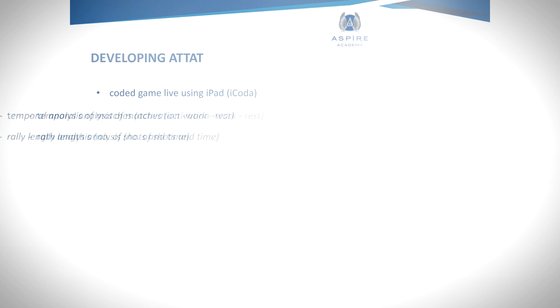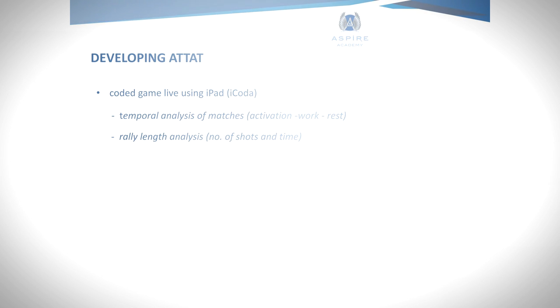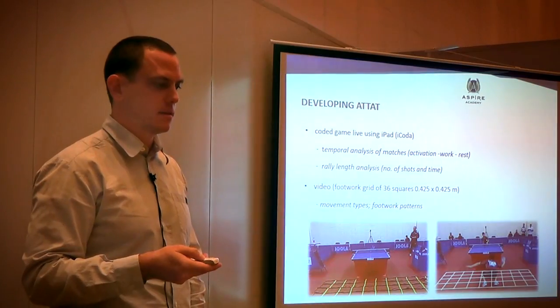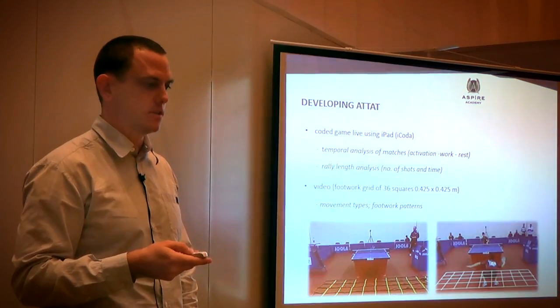ATAT stands for the Aspire Table Tennis Agility Test. So how did we develop it? We coded the game live using iPad and the software iCoder. We did a temporal analysis of the match and we did a rally length analysis incorporating the number of shots and the time. We of course videoed the match and we looked at the footwork types and the footwork patterns by pre-calibrating an area using a set of SAQ ladders. It was quite a crude method but very effective actually.